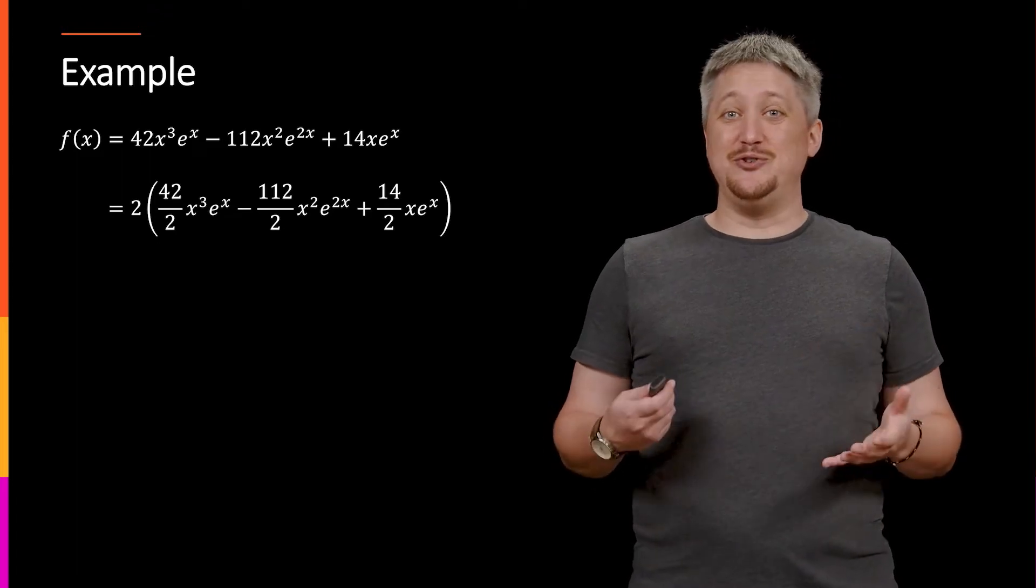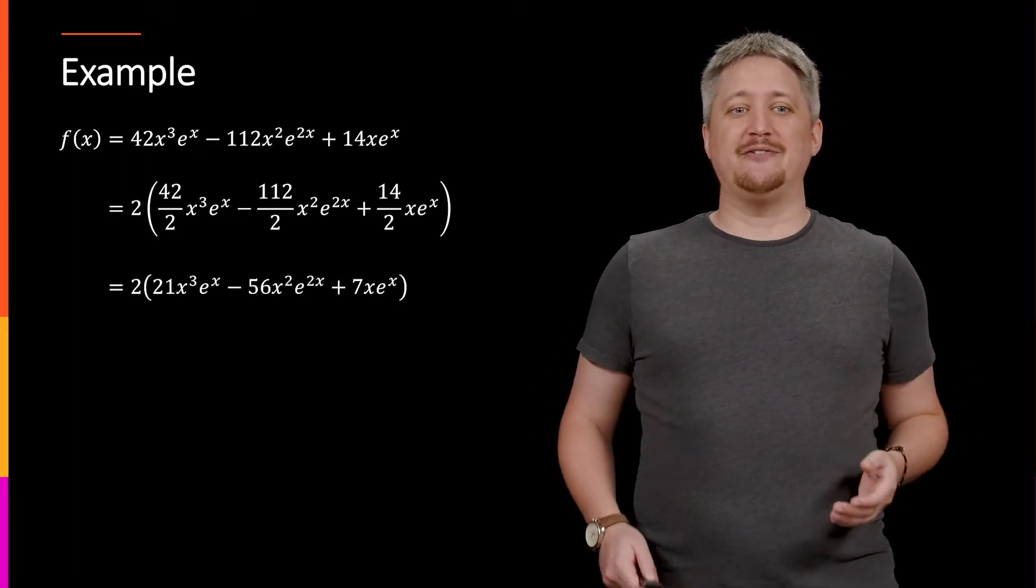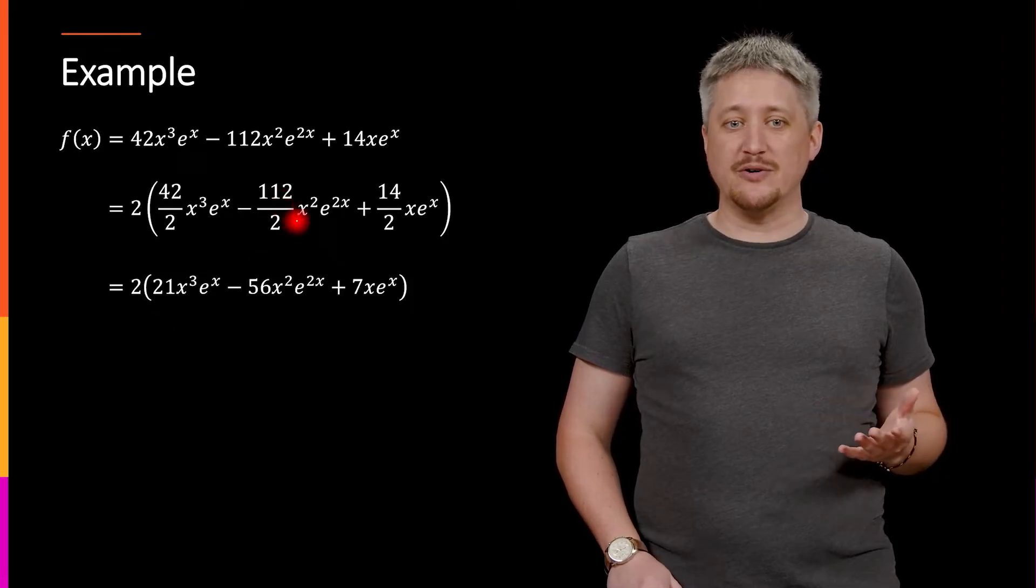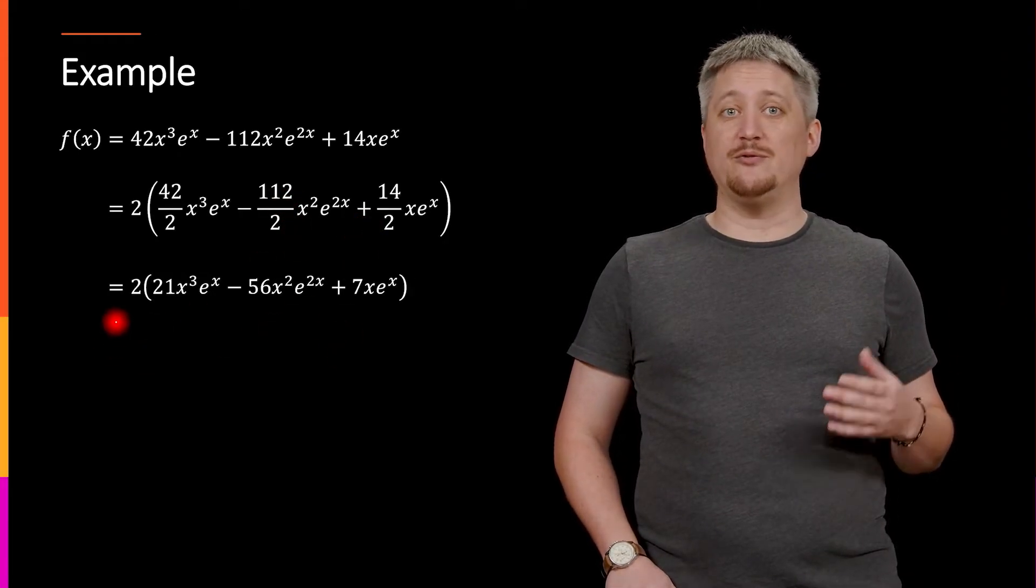So if I do all those divisions that gets me down to: I have 42 over 2 is 21, 112 over 2 is 56, 14 over 2 is 7. I've now factored out 2.